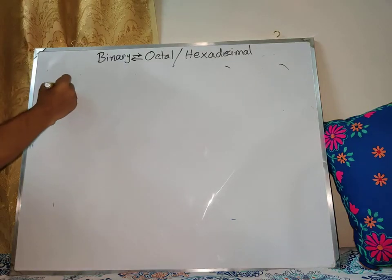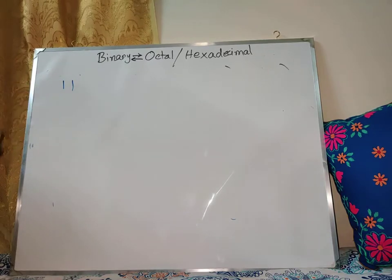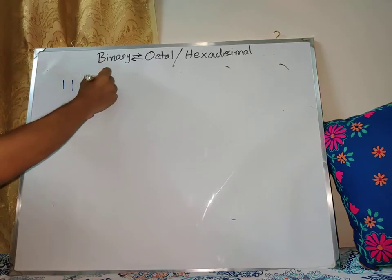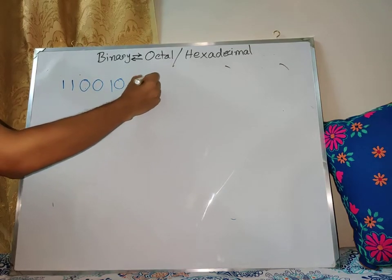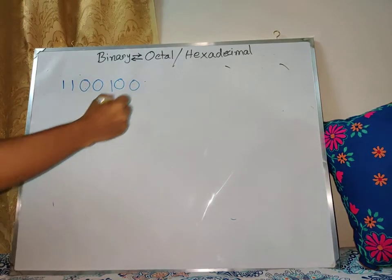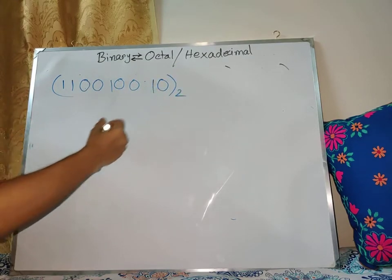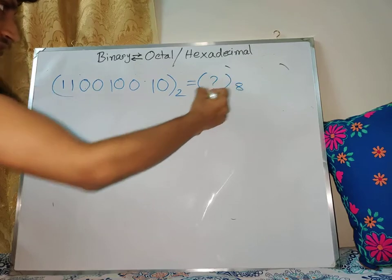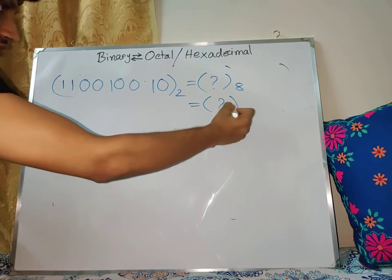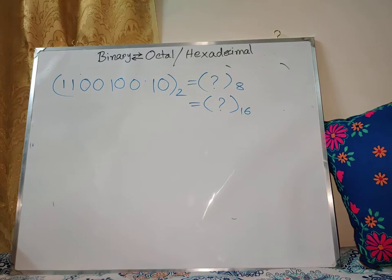We will look at a different example for binary, octal, and hexadecimal. This is the example — the same number is shown in both octal and hexadecimal.